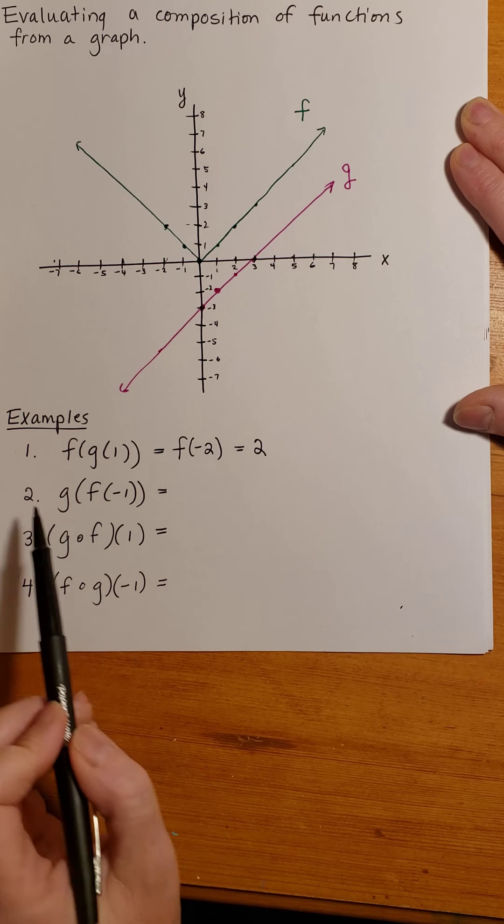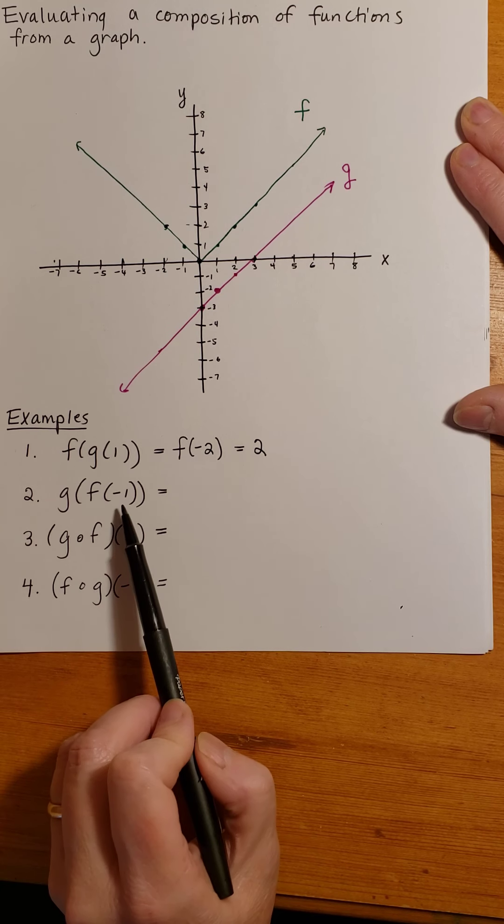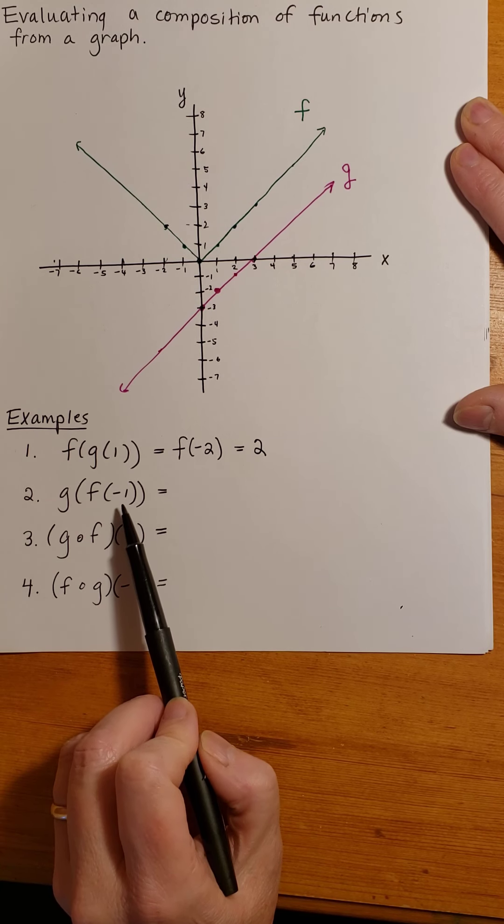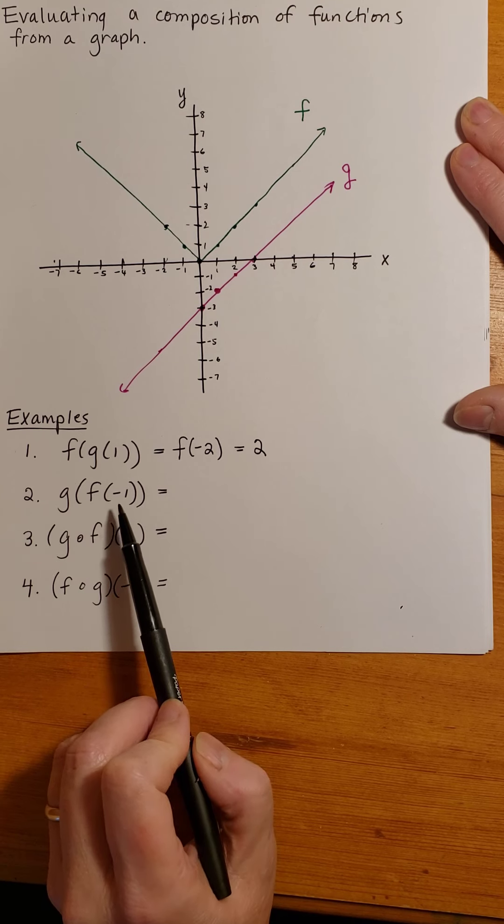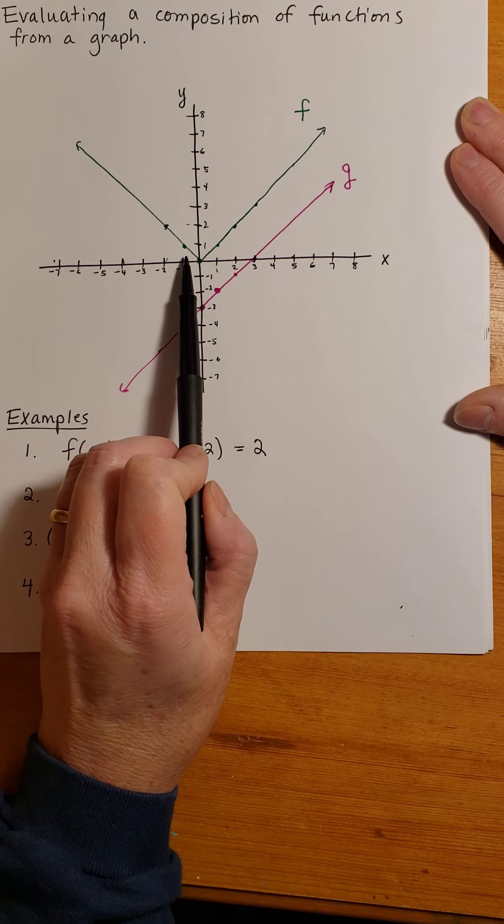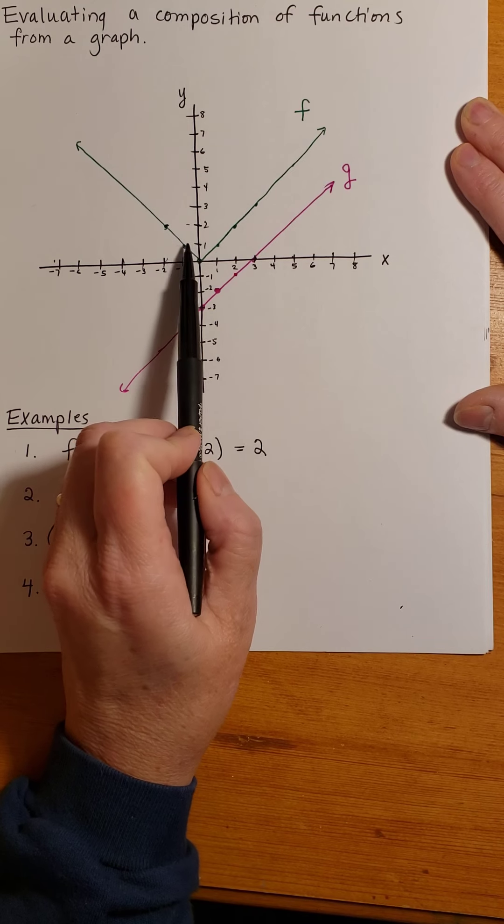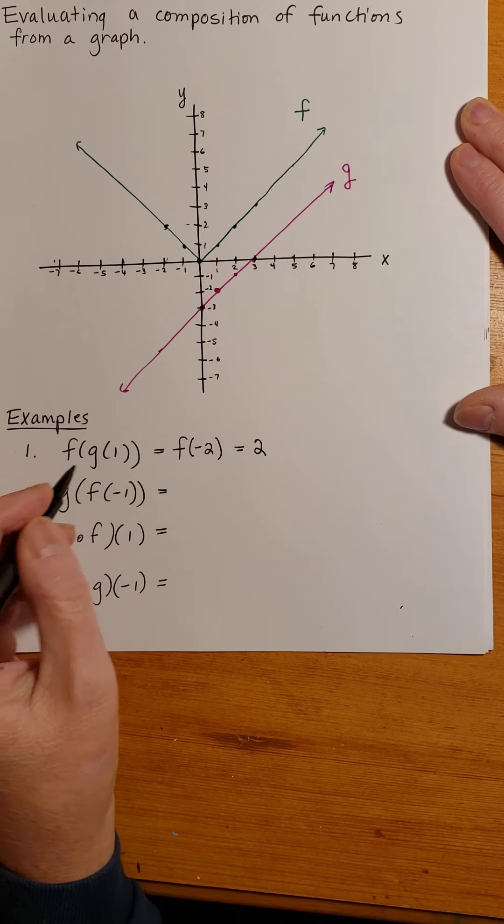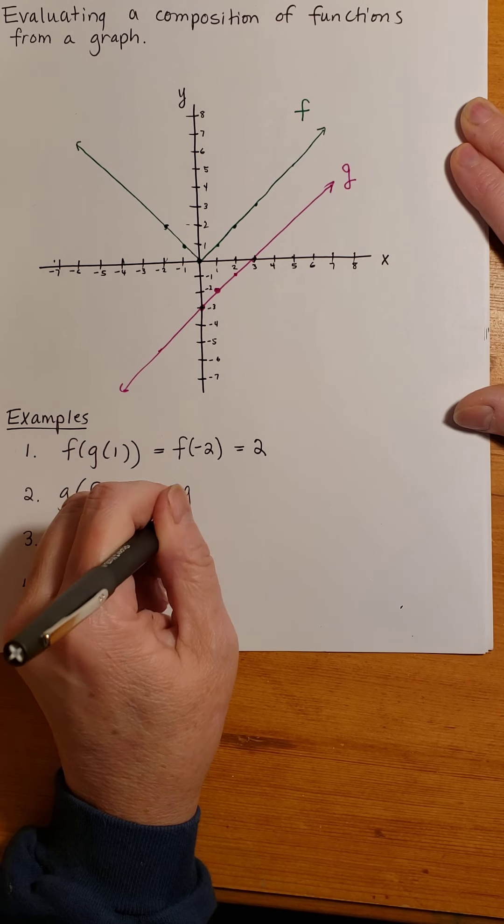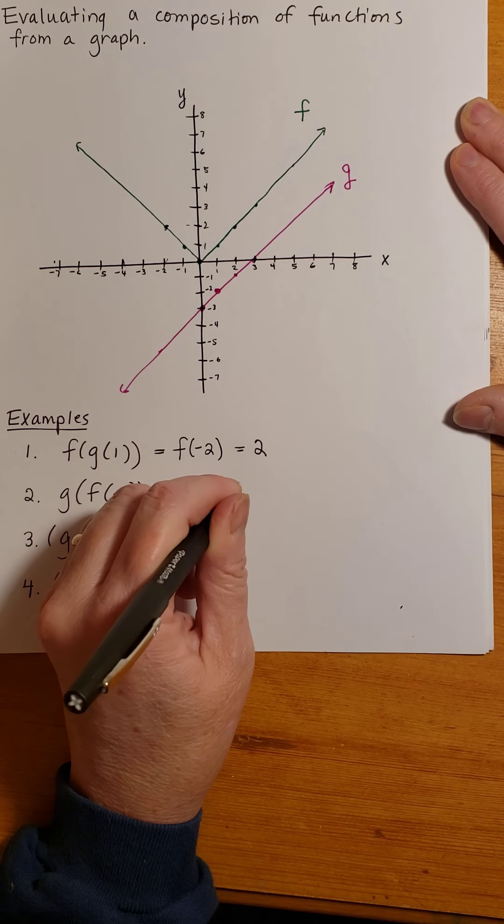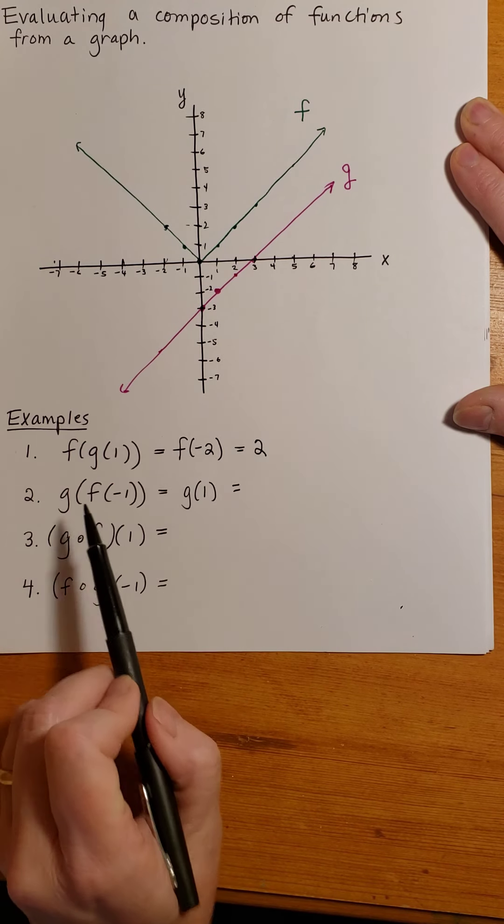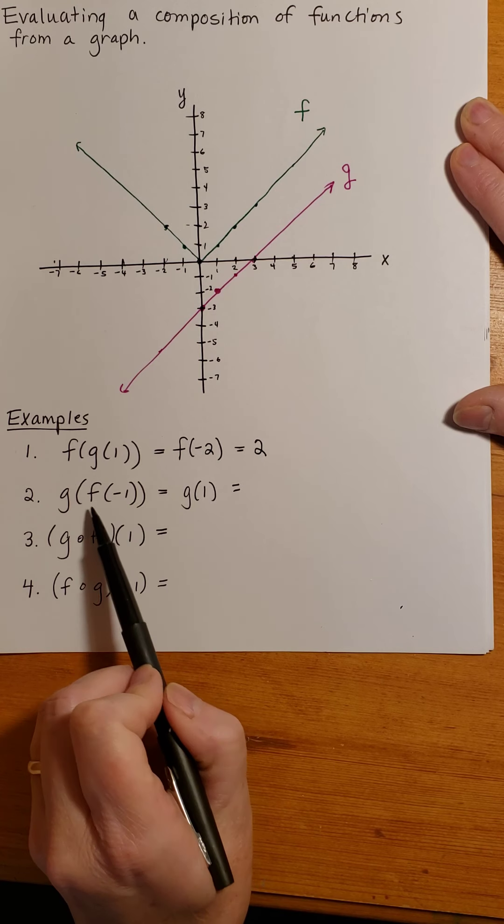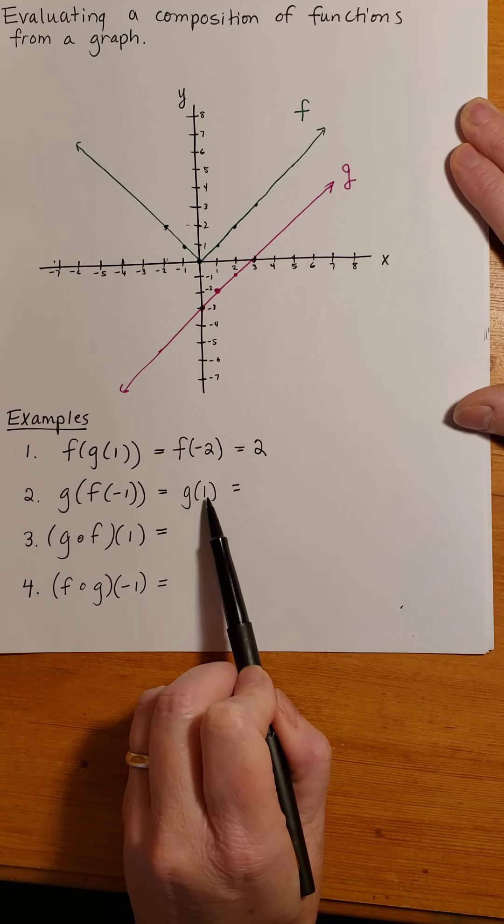Now in example 2, I'm putting in negative 1 into my f function. Here's negative 1. Taking the vertical path to the function f, I see we're at a height of 1. So f of negative 1 is 1, and I replace this inside part of g with f of negative 1. That's 1.